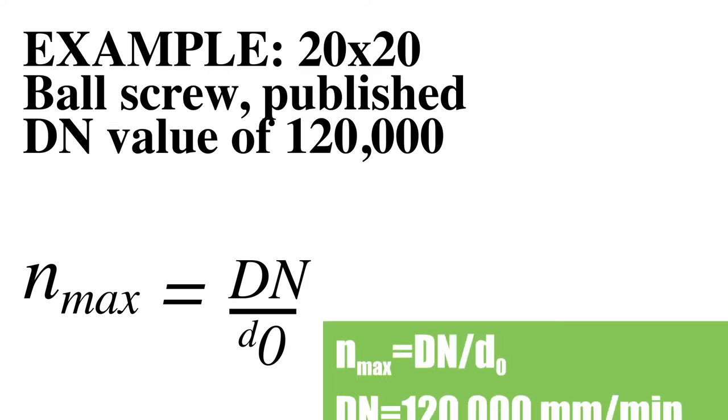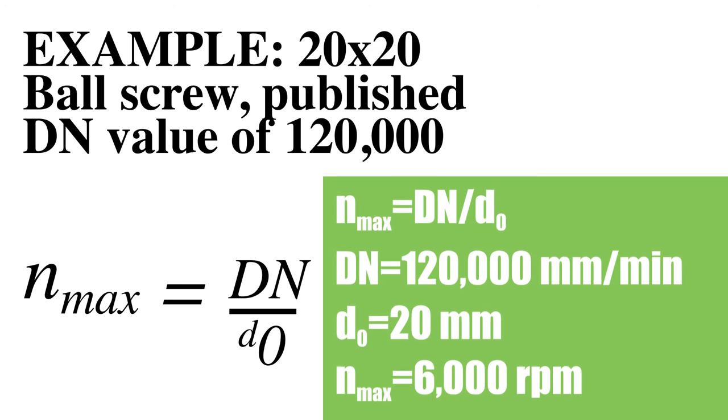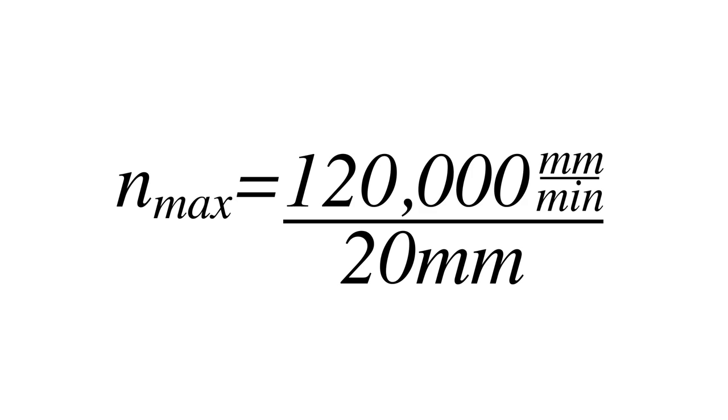In ball screw sizing, the DN value can be used to determine the maximum speed of the screw assembly based on the nominal diameter of the screw. However, using the DN value to determine maximum speed may give invalid results for very small or very large diameter screws. In these cases, it's important to check the manufacturer's published maximum speed for the specific ball nut, diameter, and lead.